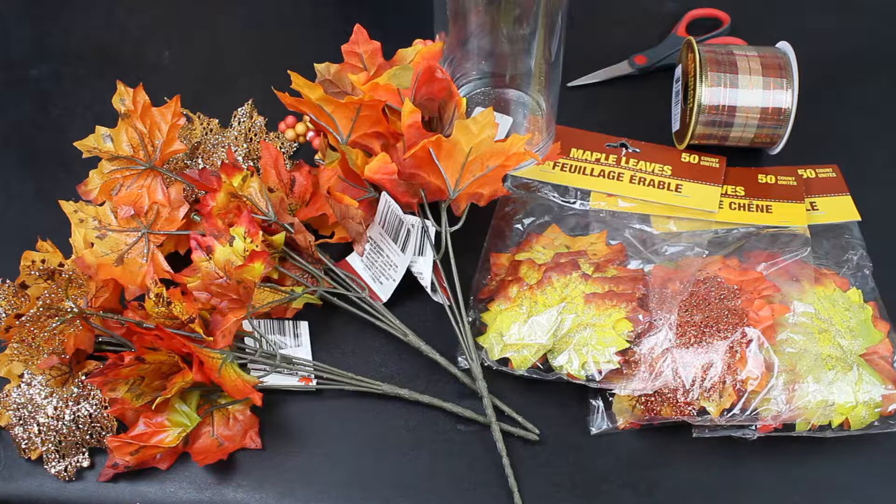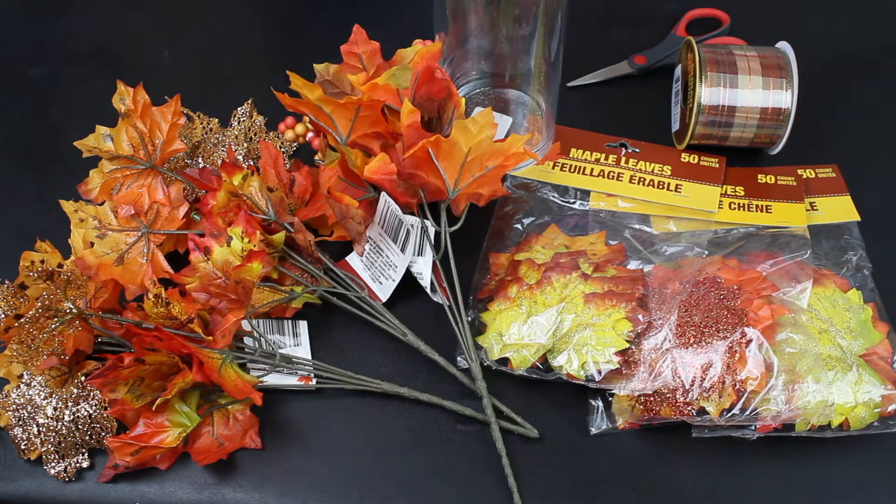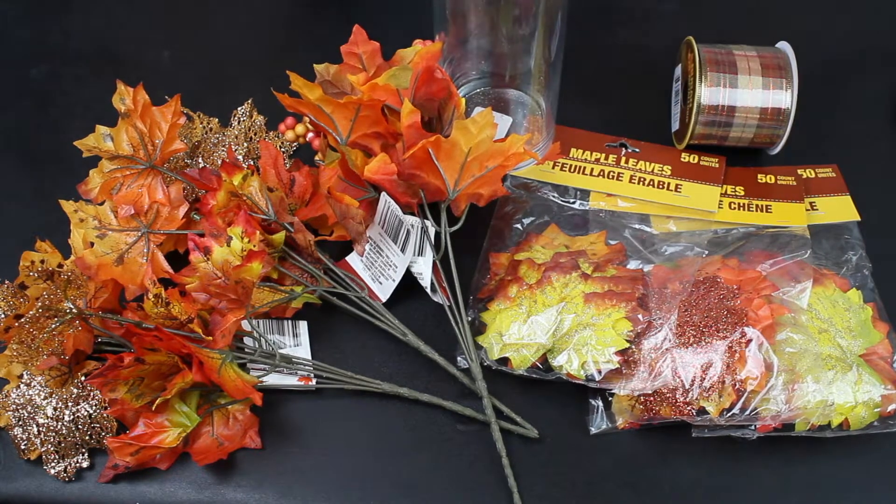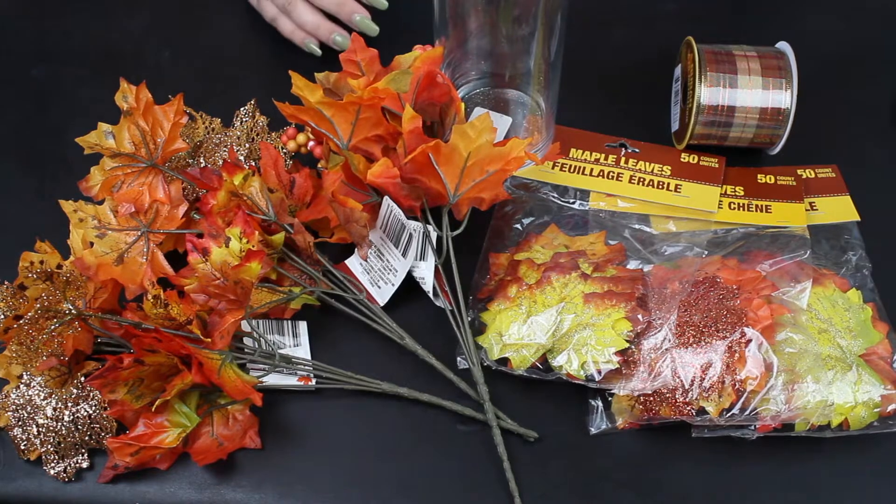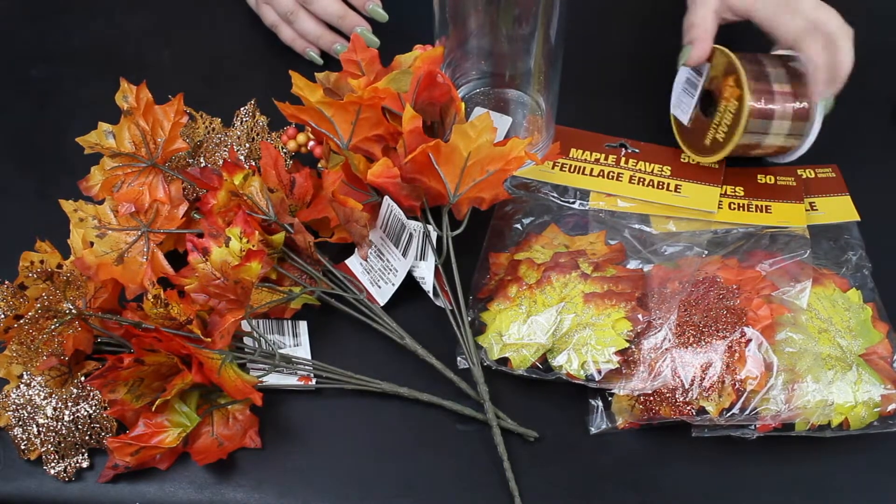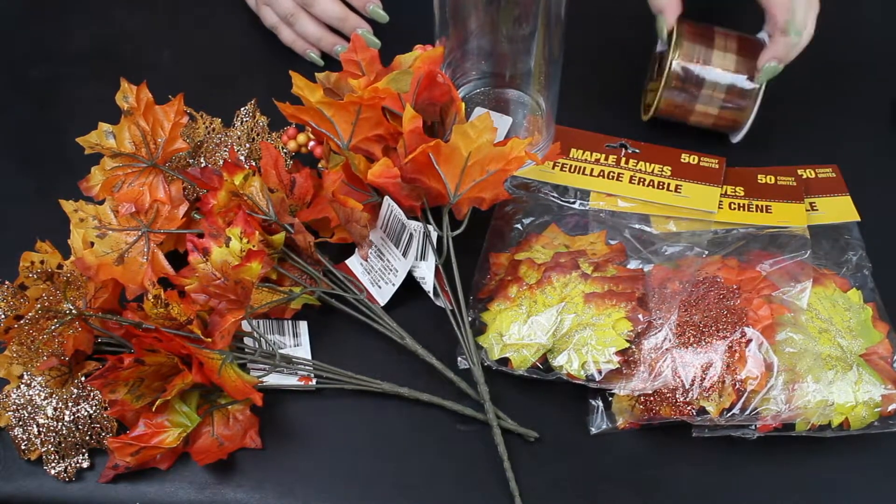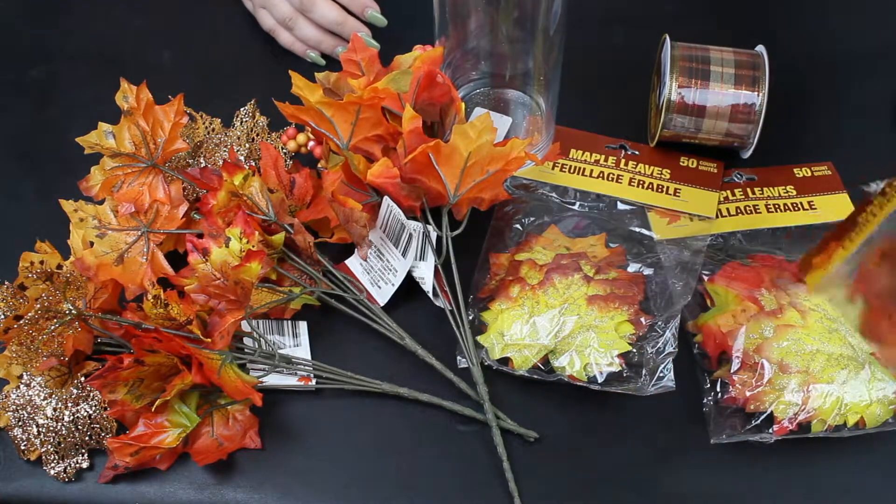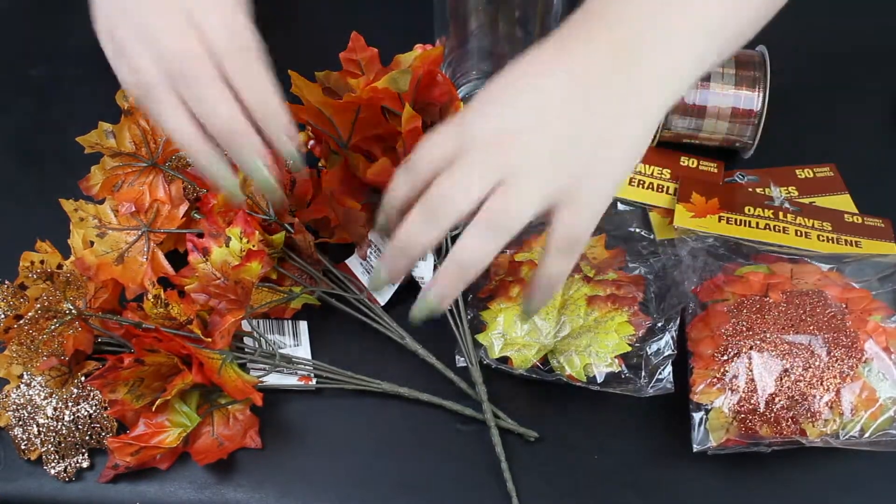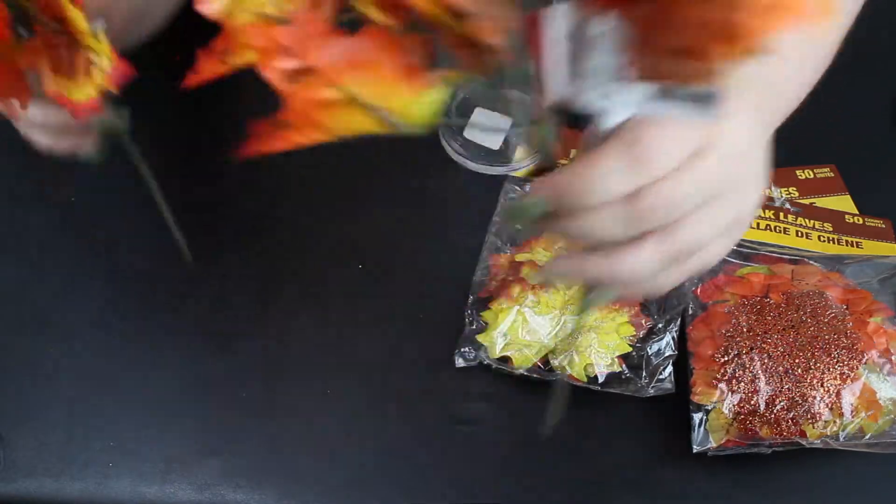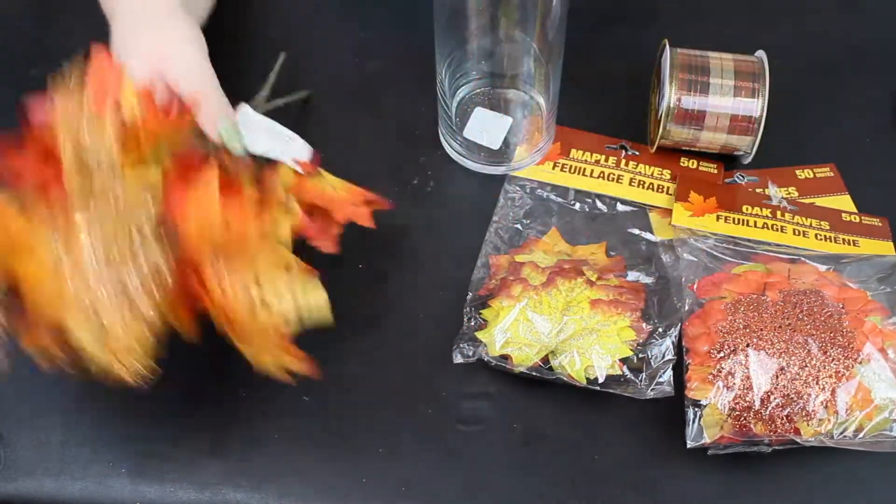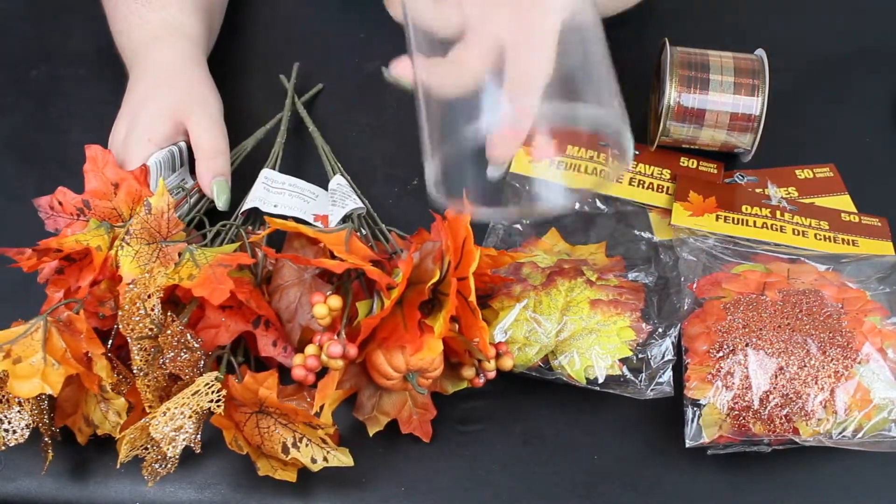So this is one of the DIYs, an eight dollar DIY not including scissors. This was eight dollars all from the Dollar Tree. For this one you need ribbon, which I chose plaid because plaid is in this season and it has the orange feel in it. And then I bought three bags of individual leaves, three separate flower bundle kind of things, one that has a pumpkin in it, and then a vase.